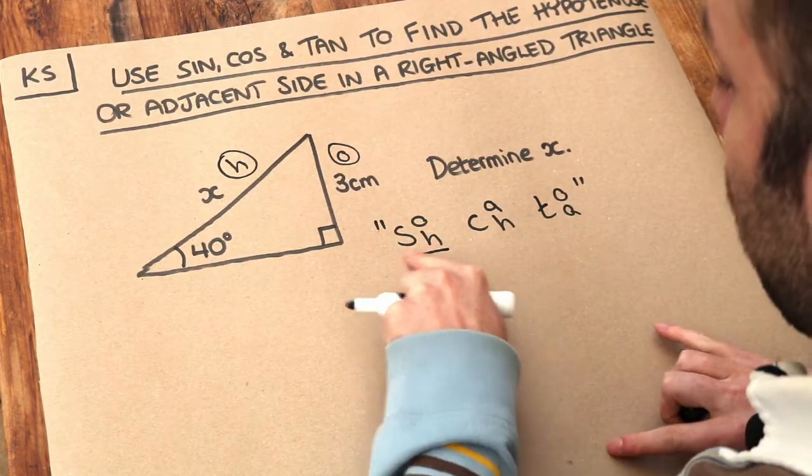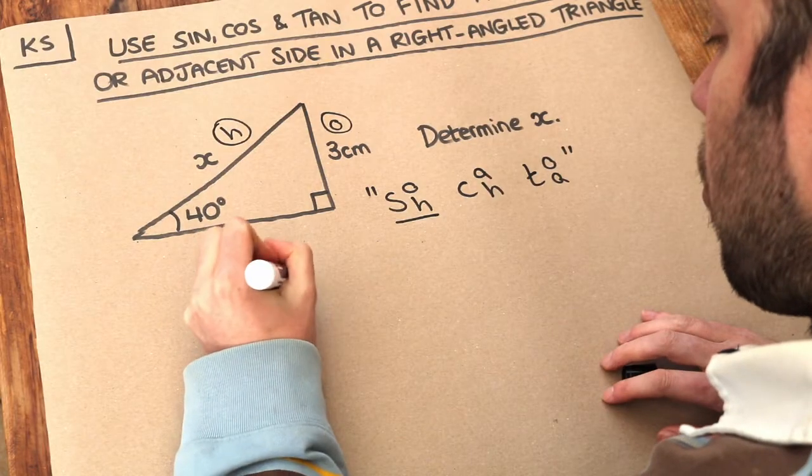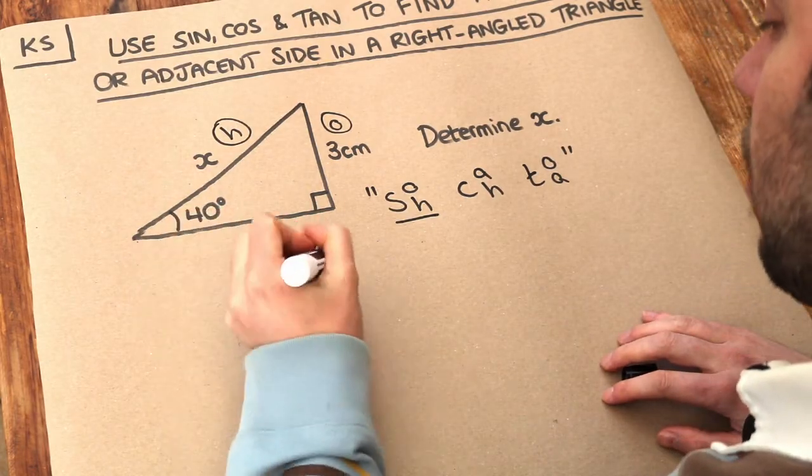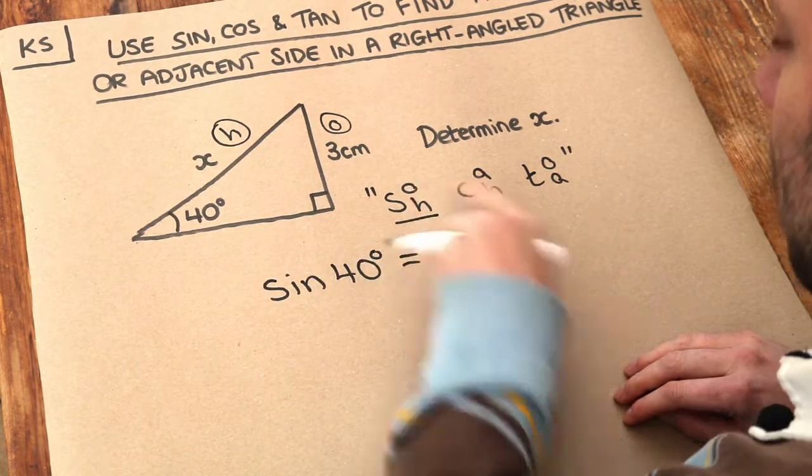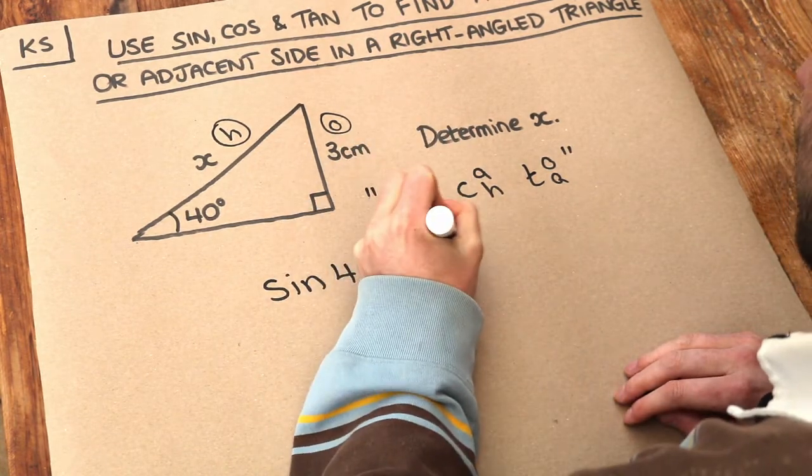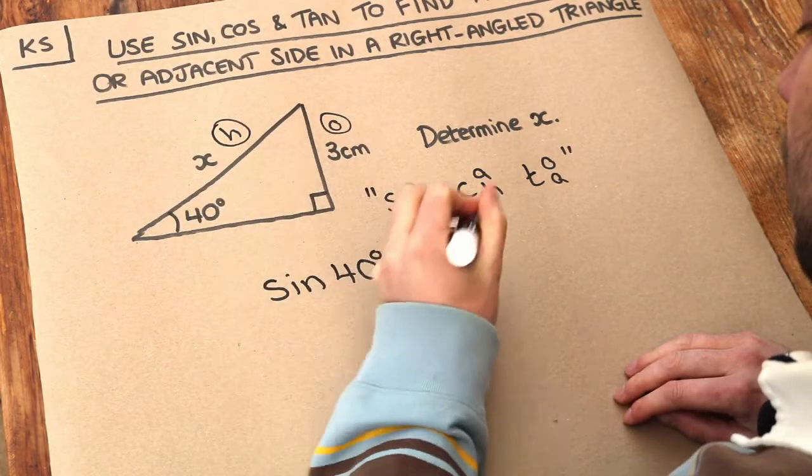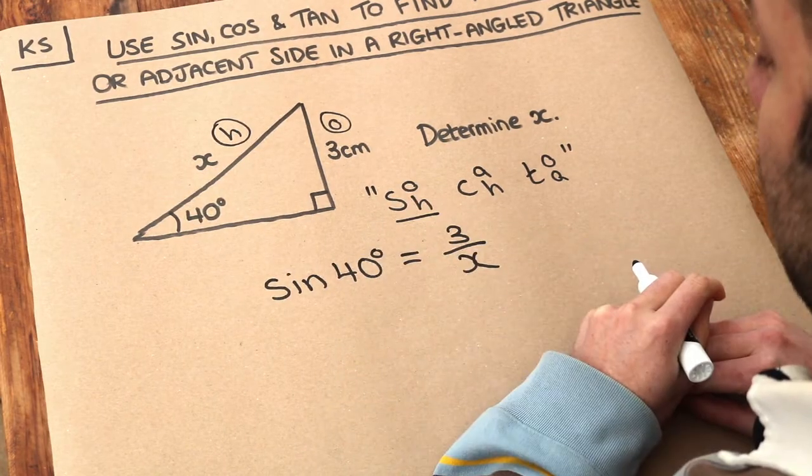So we write out the formula that we need, it's sine of the angle, so sine of 40 degrees, is equal to the opposite, which is 3, over the hypotenuse, which is x.